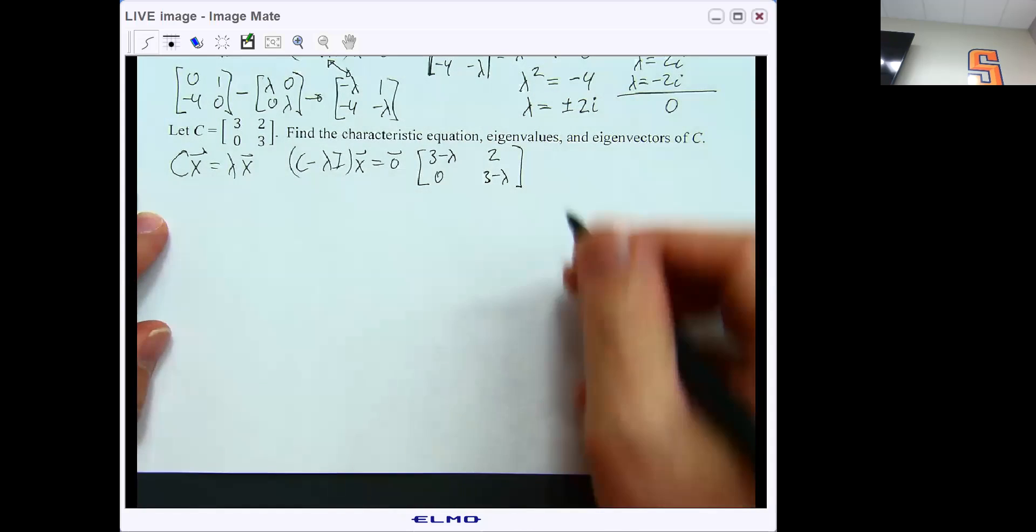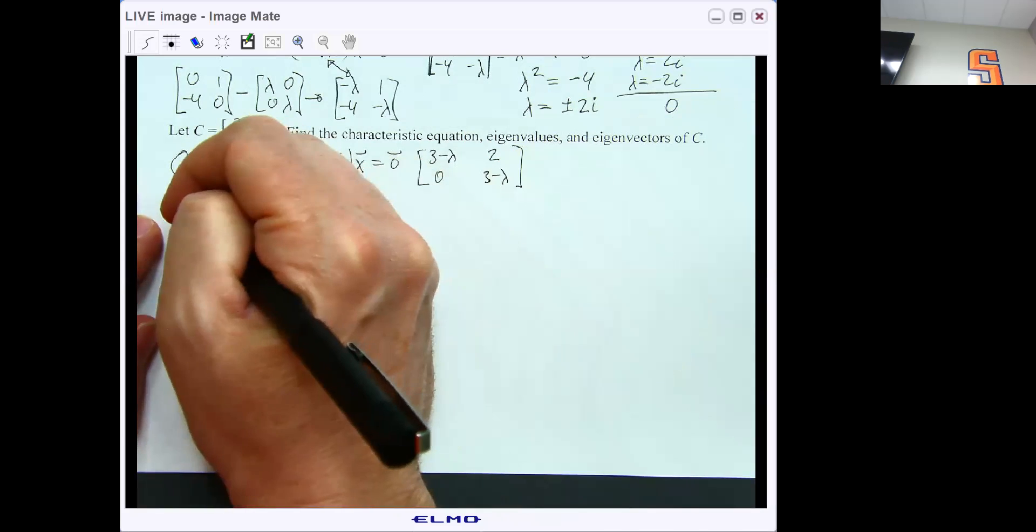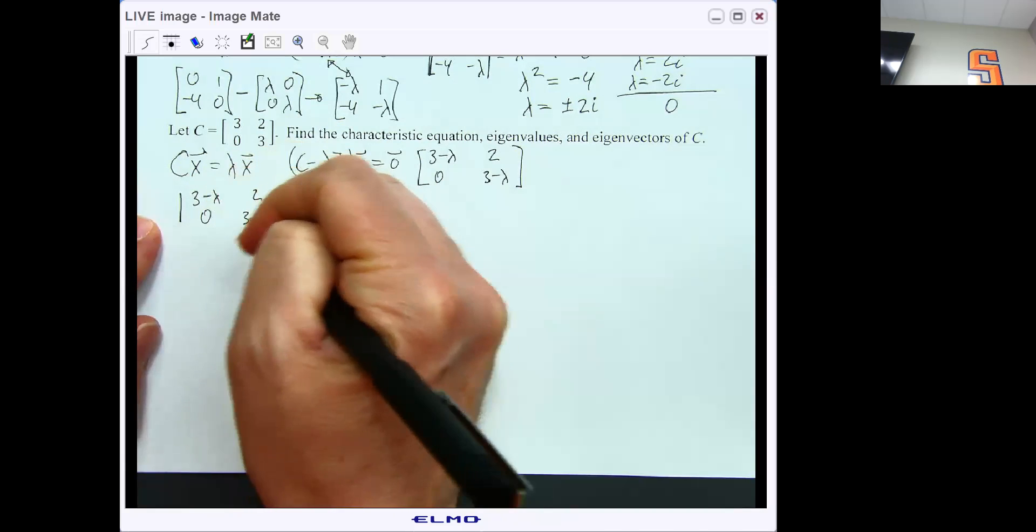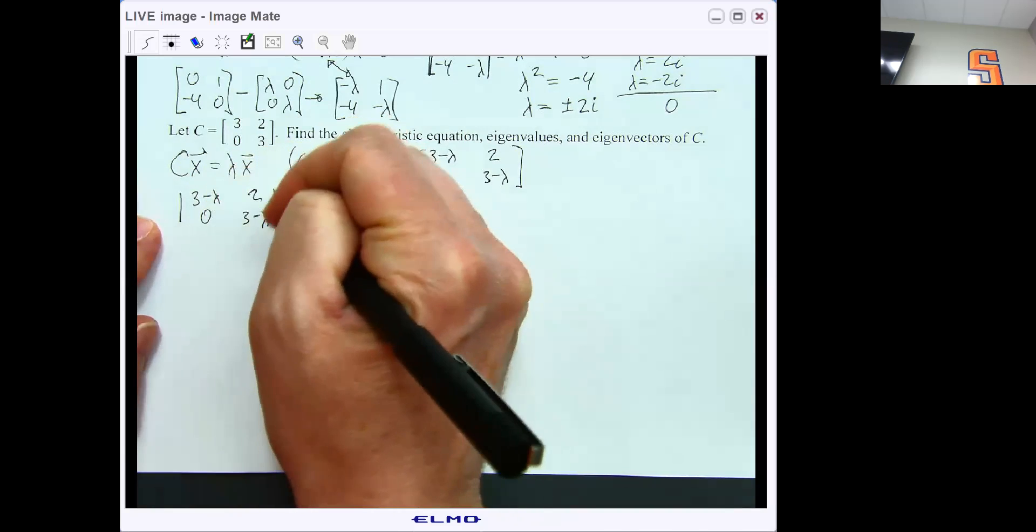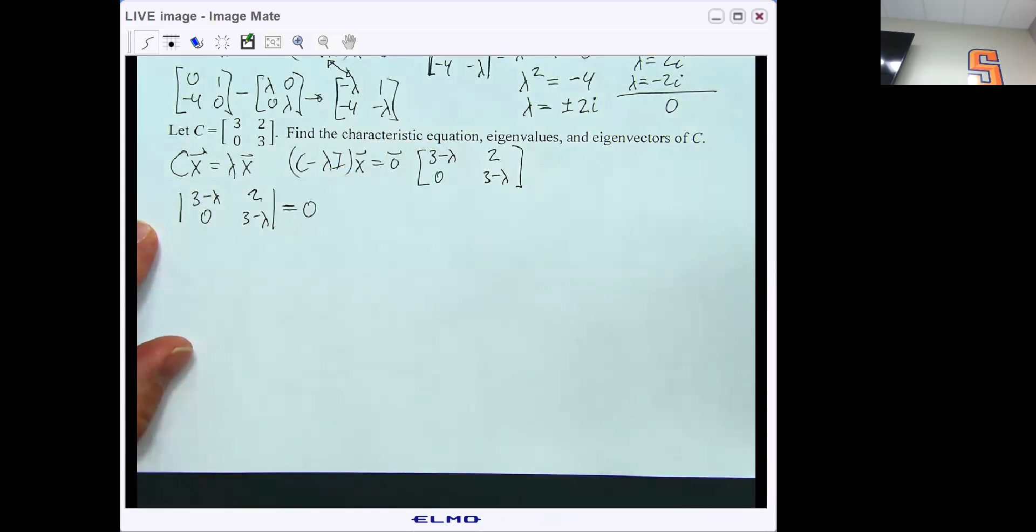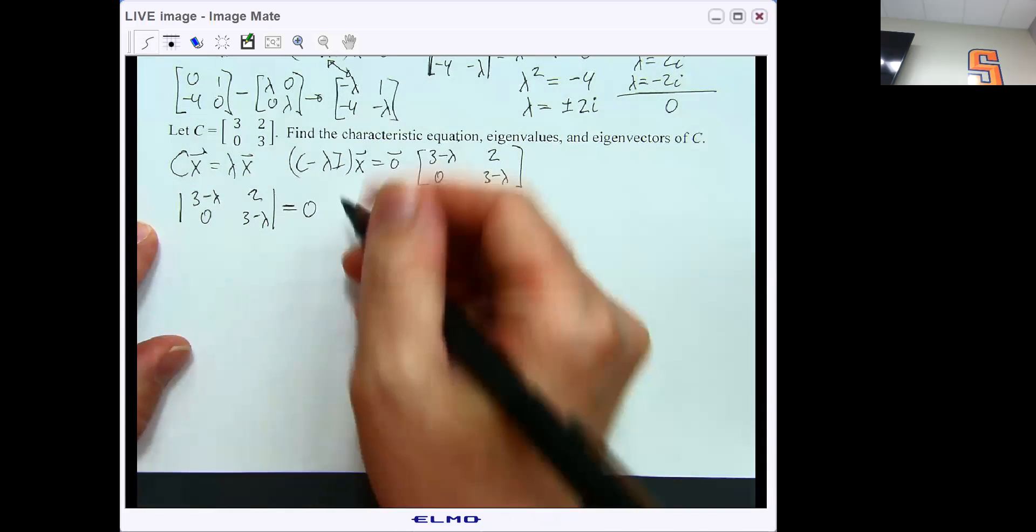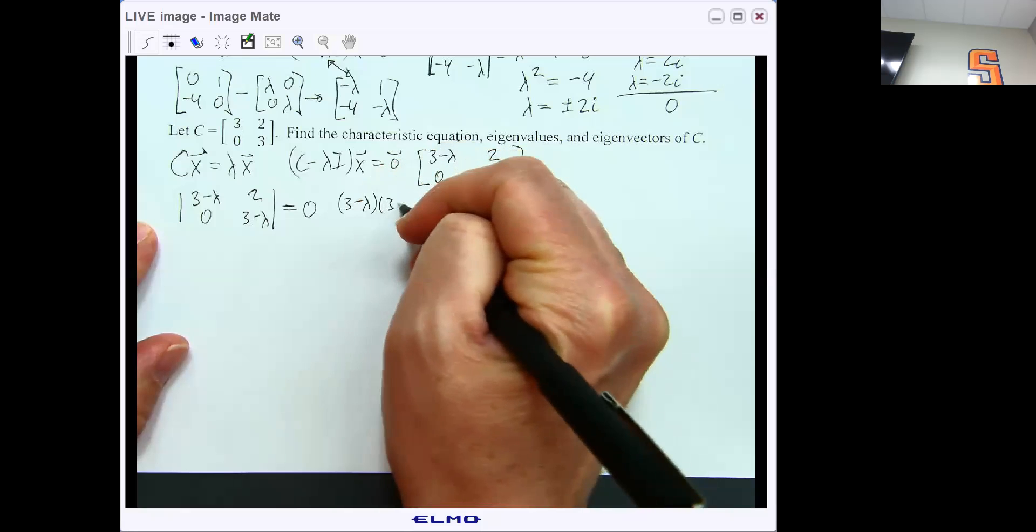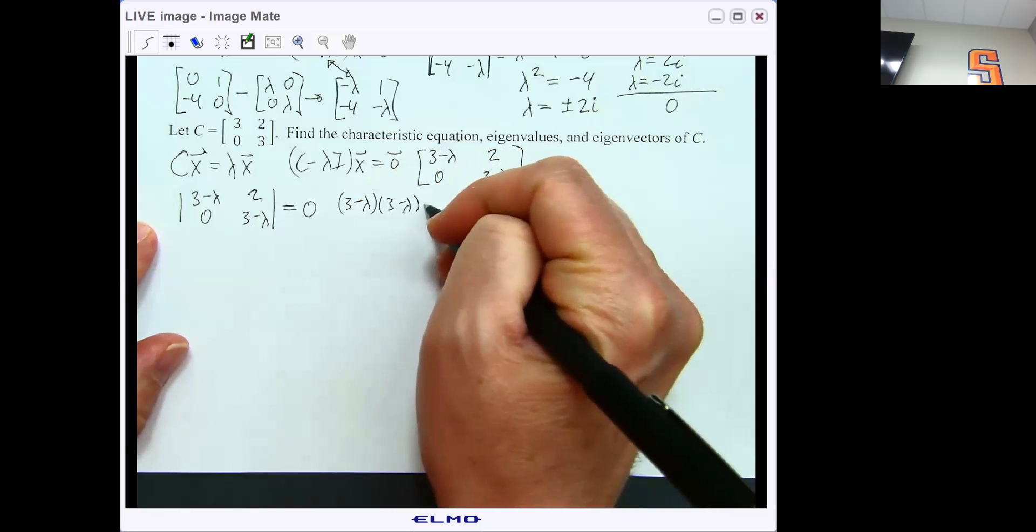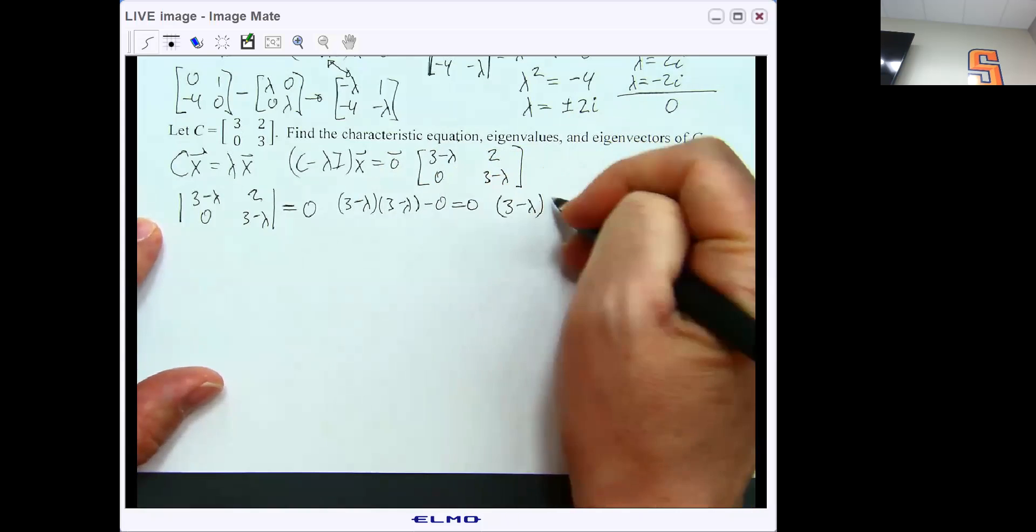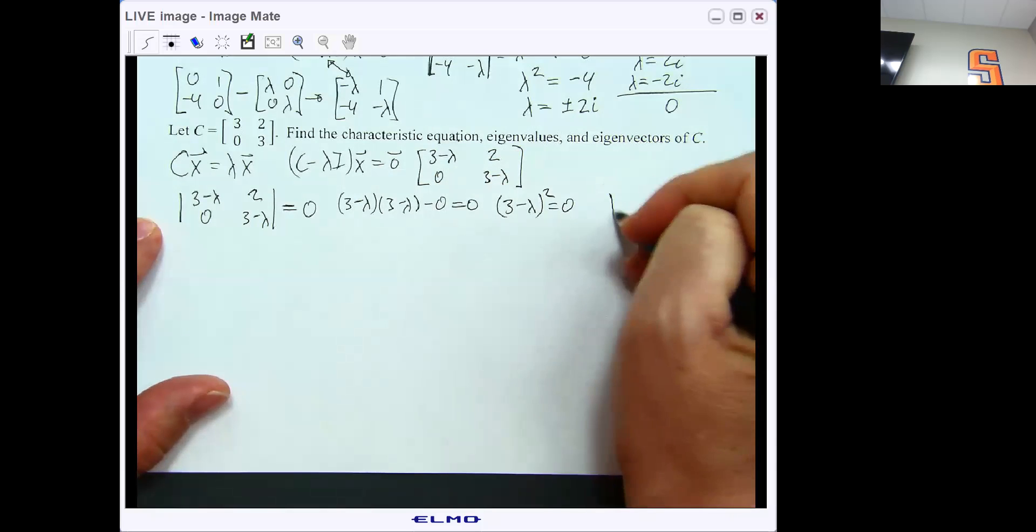And if I take the determinant of that and set that determinant equal to 0, we'll get our characteristic equation, which was our first task. So we'll get (3 minus lambda) times (3 minus lambda) minus 0 equals 0, or (3 minus lambda) squared equals 0.